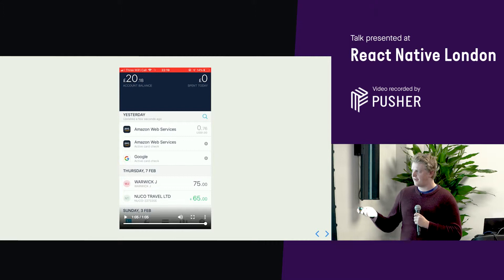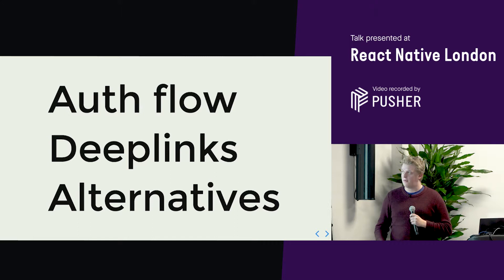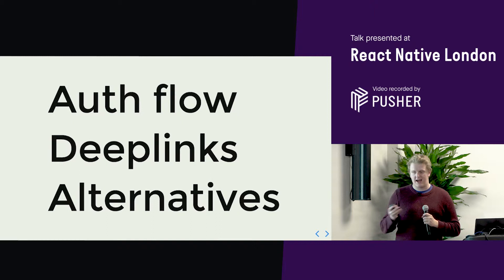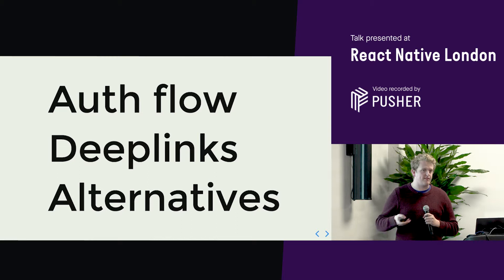So what are the three things I want to talk about? One is the different auth flows — we just saw Monzo's example, and there are lots of different things you can do. The second is deep links, and actually the majority of the magic is around how to configure deep links and pass parameters between them. Third is the alternatives — using things like text, Facebook Messenger, and so on.